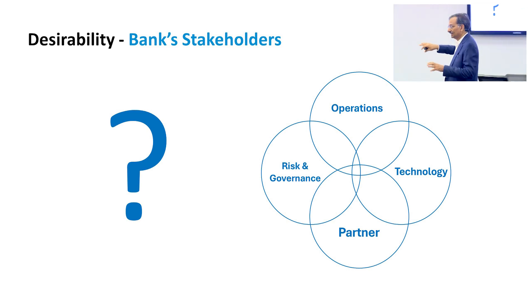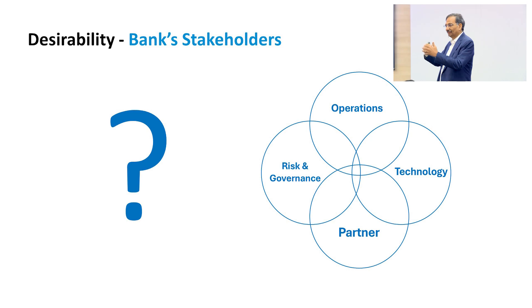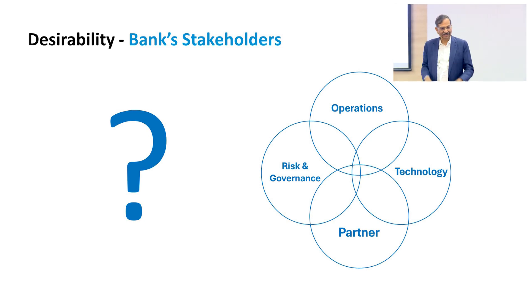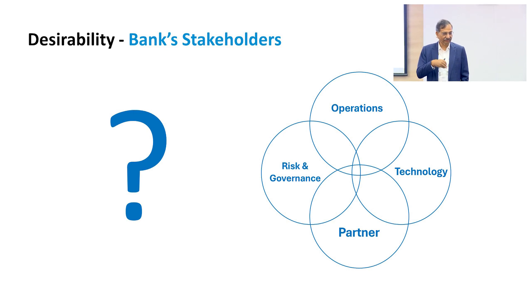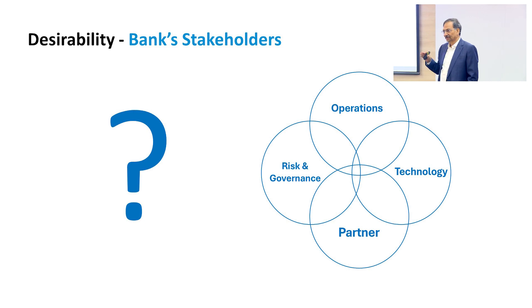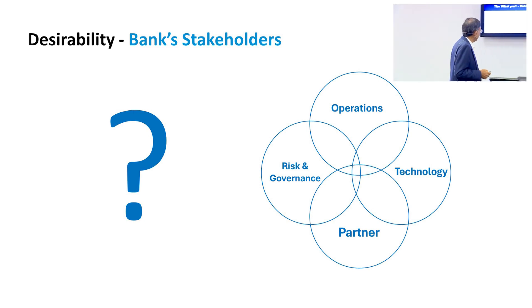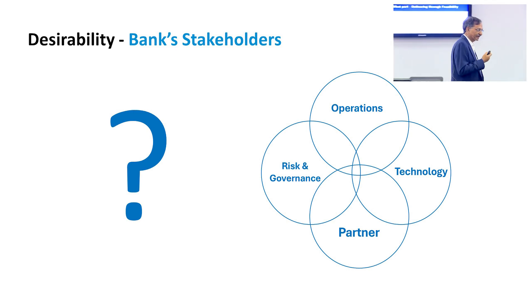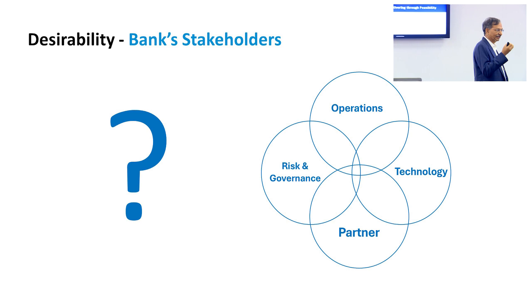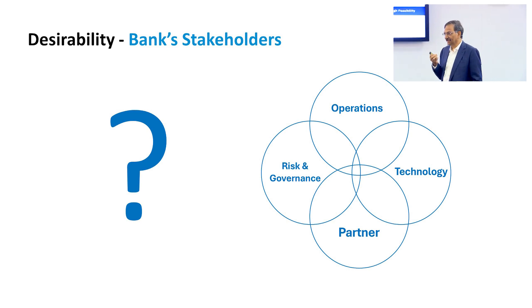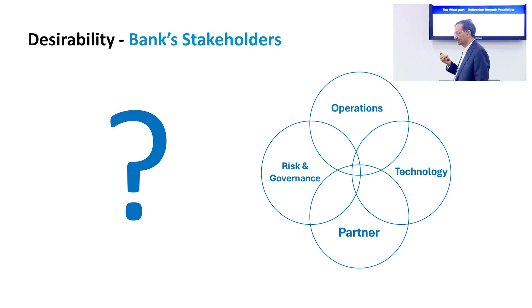Everybody has their own desirability. We can work around design thinking to identify their algorithm — three to five things for operations, three things for technology, three things for risk. Don't have more than three to five items to identify. That is the 'why' of desirability. I've just touched the 'why' of desirability. Then I need to move to feasibility — technology feasibility.